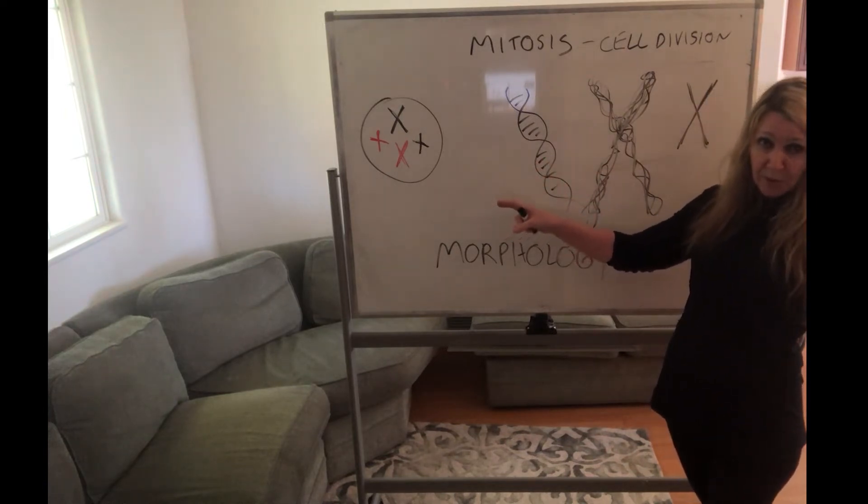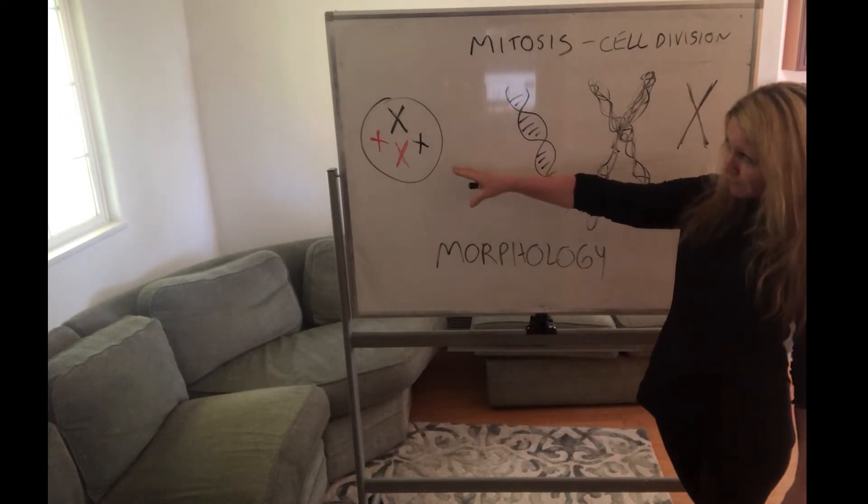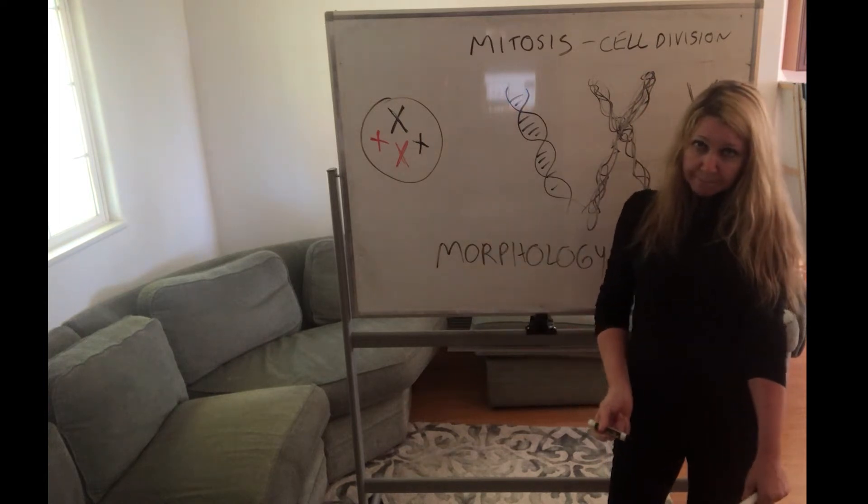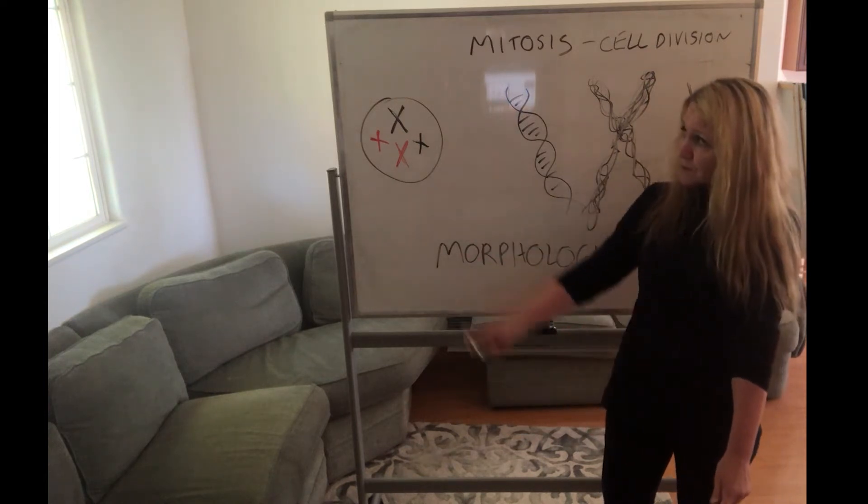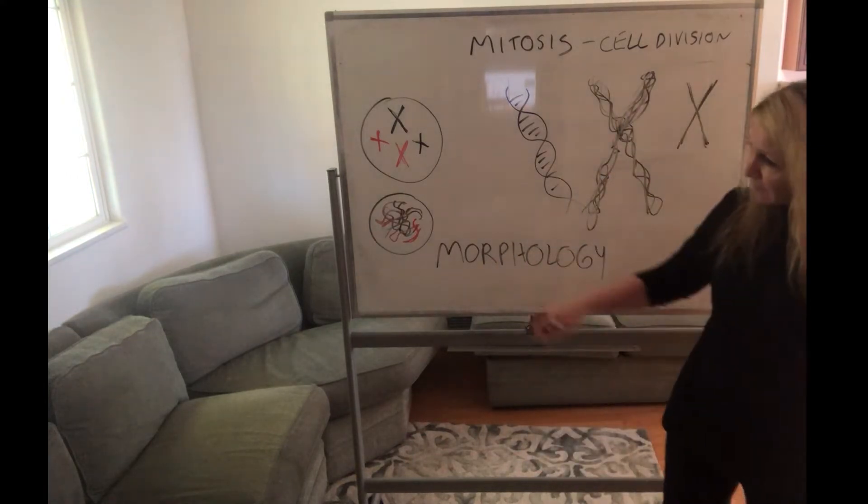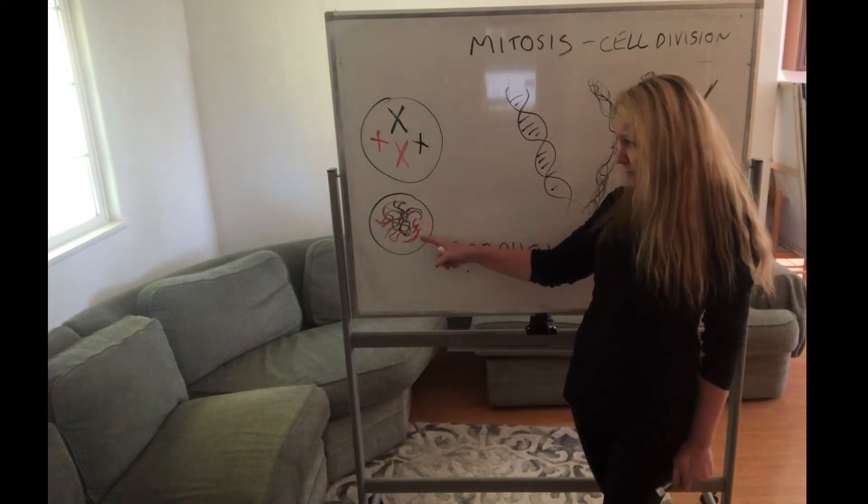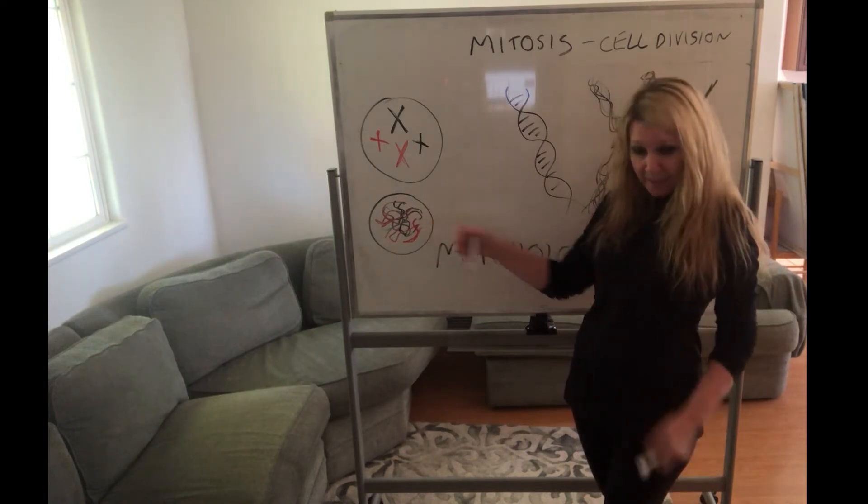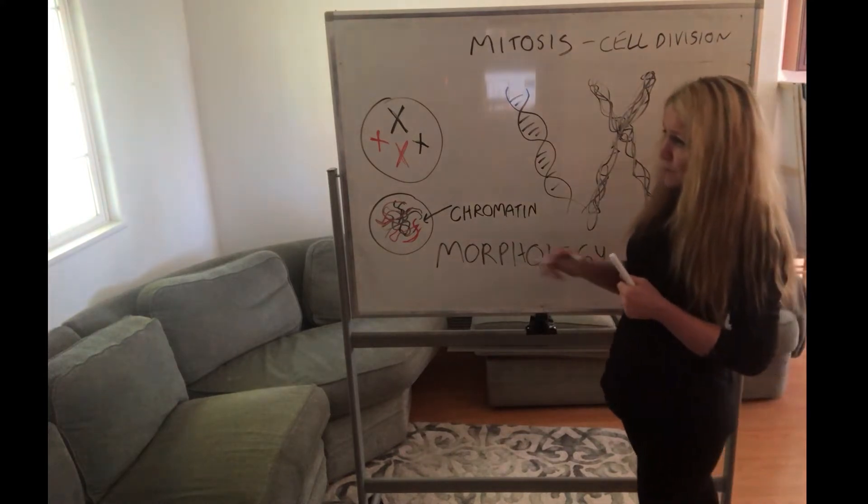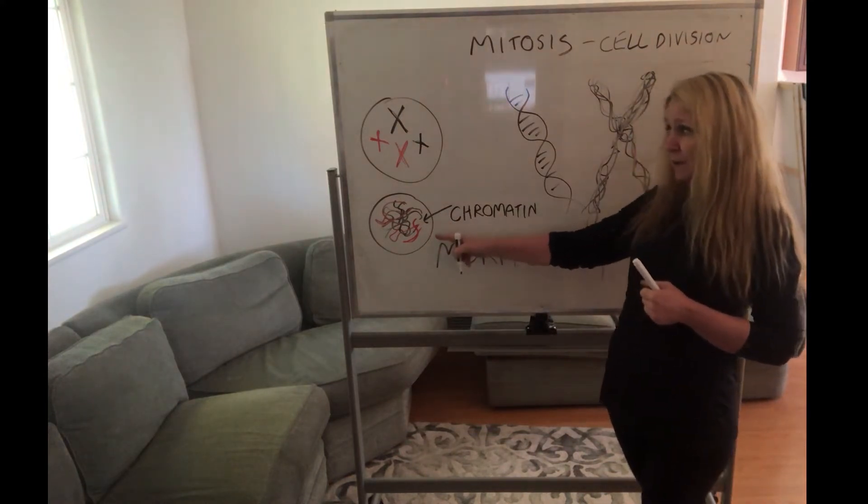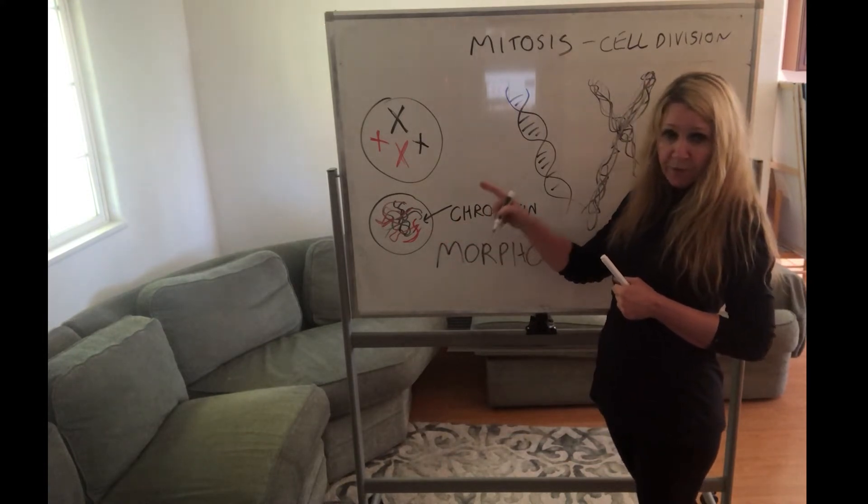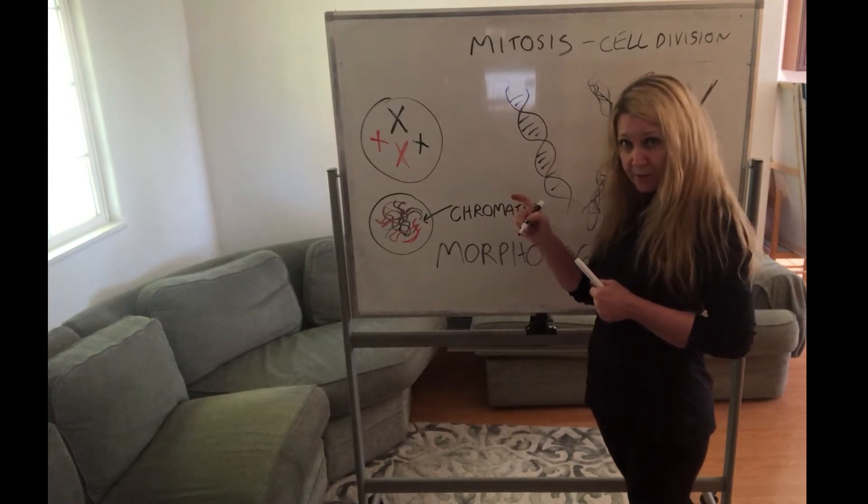But here we have a cell—it's getting ready to divide because it formed these chromosomes. Before this, it had what looked like spaghetti. Ready to divide, the DNA looks more like this. We call this chromatin—a bowl of spaghetti of DNA. This is normally what the cell looks like inside the nucleus. The cell, however, to get ready to divide, this chromatin, all this DNA, condenses into what are called chromosomes.